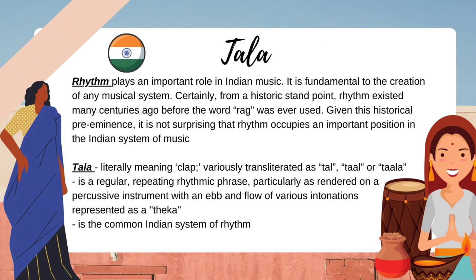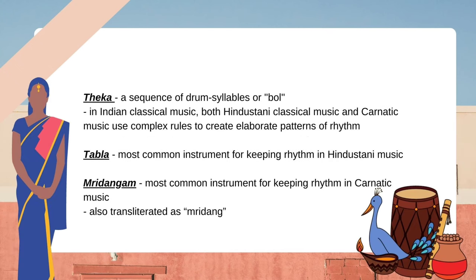Rhythm plays an important role in Indian music; it is fundamental to the creation of any musical system. From a historic standpoint, rhythm existed many centuries ago before the word raga was ever used. Tala, literally meaning clap (variously transliterated as tal or tala), is a regular, repeating rhythmic phrase particularly as rendered on a percussive instrument with an ebb and flow of various intonations, represented as a theka — the common Indian system of rhythm. Theka is a sequence of drum syllables or bol. In Indian classical music, both Hindustani classical music and Carnatic music use complex rules to create elaborate patterns of rhythm. Tabla is the most common instrument for keeping rhythm in Hindustani music; mridangam (also transliterated as Mridang) is the most common instrument for keeping rhythm in Carnatic music.